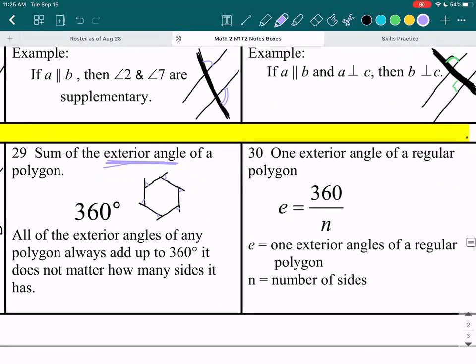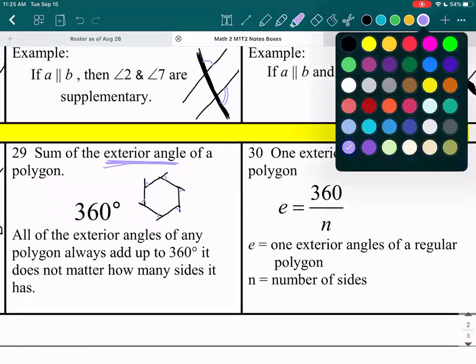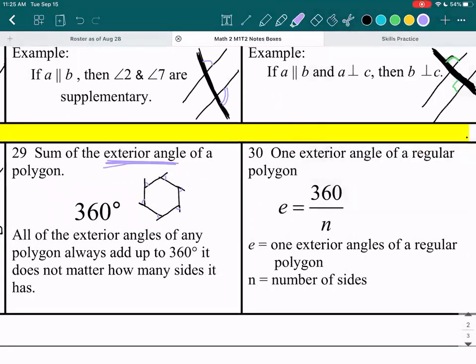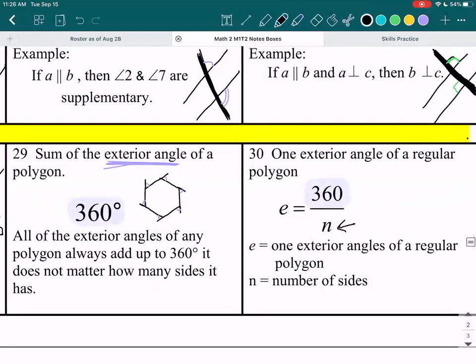One exterior angle of a regular polygon is you just take the 360 degrees and divide it by the number of sides you have. So n stands for the number of sides.